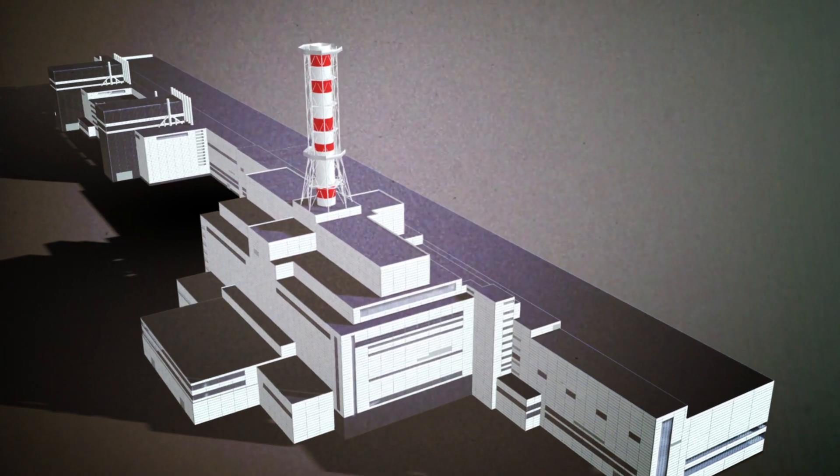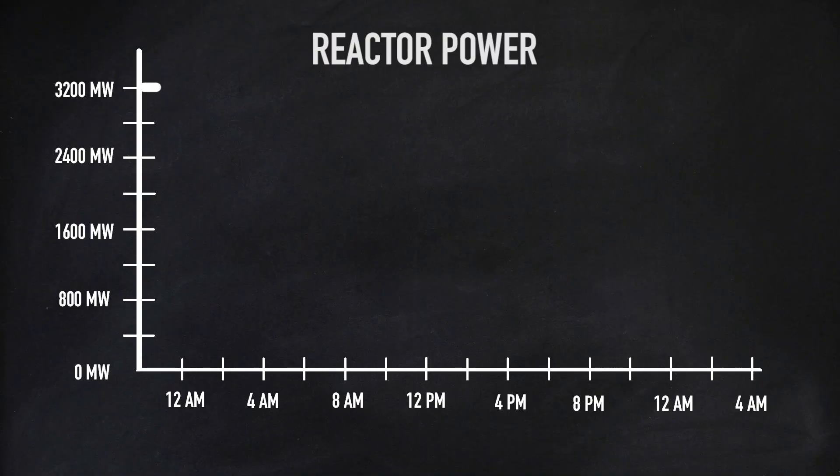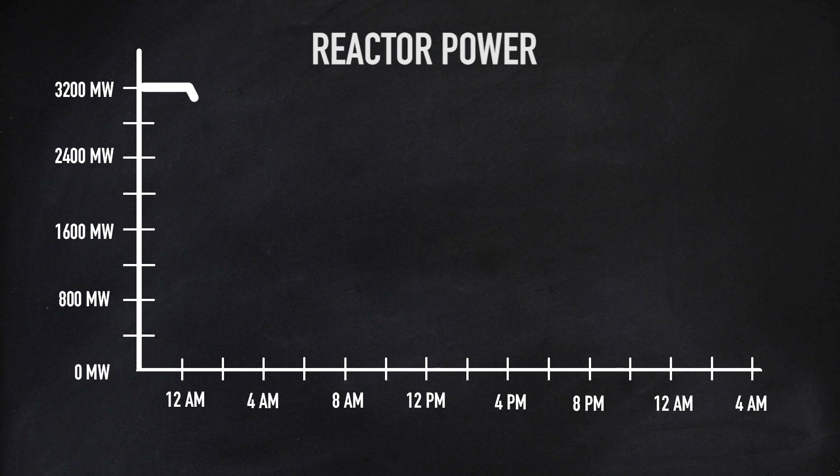At 1 o'clock in the morning, the shift leader gives the go-ahead for his team to begin powering down the reactor. Up until now, the reactor has been running at full power following normal operation. Steadily, the operators begin to reduce the power of reactor 4.